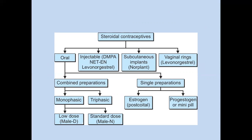This chart shows steroidal contraceptives. These include oral contraceptives; injectable types such as DMPA — depomedroxyprogesterone acetate — and levonorgestrel; subcutaneous implants such as Norplant; and vaginal rings containing etonogestrel. These three types of contraceptive methods have already been discussed.